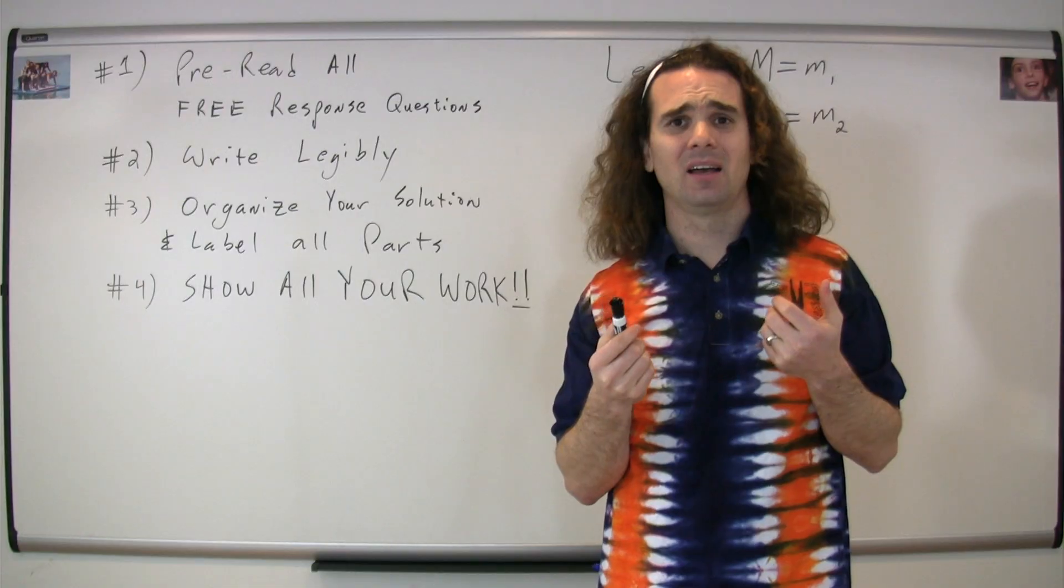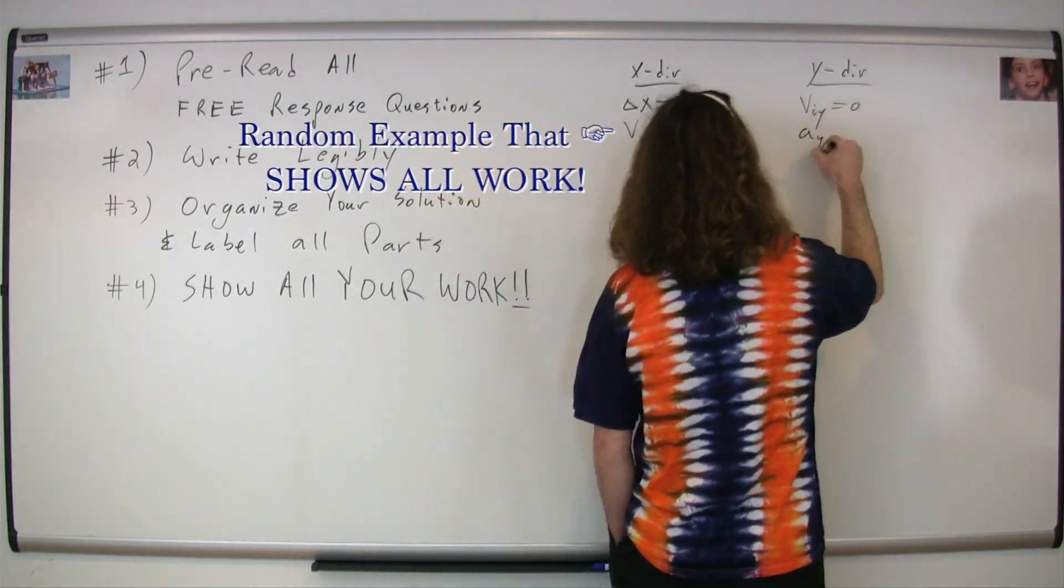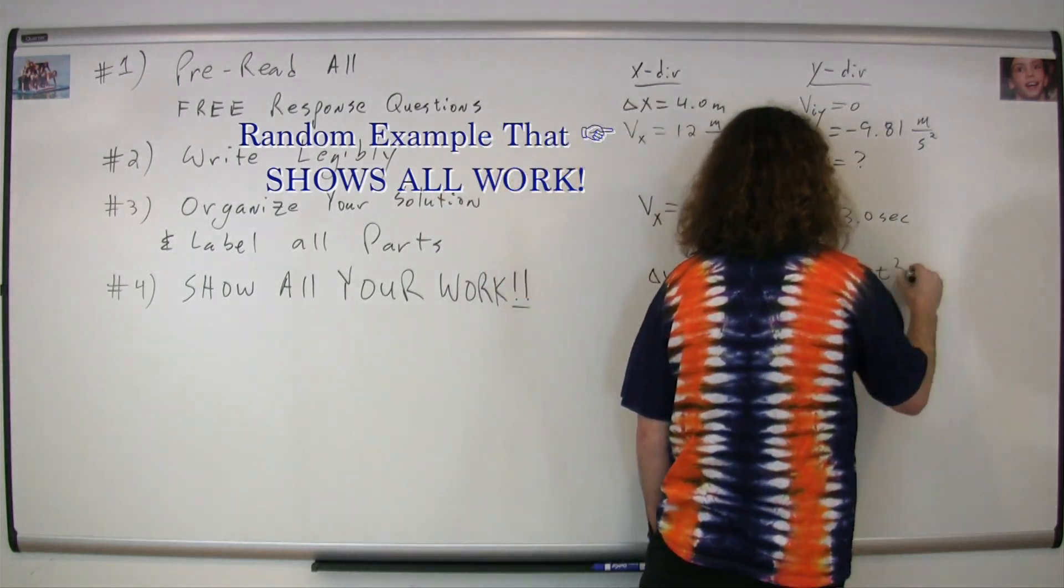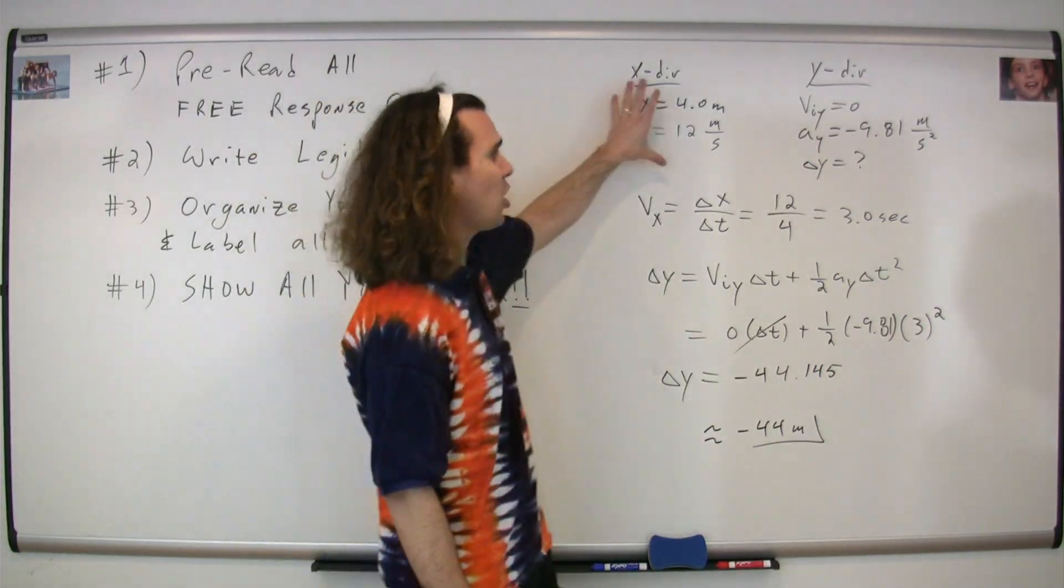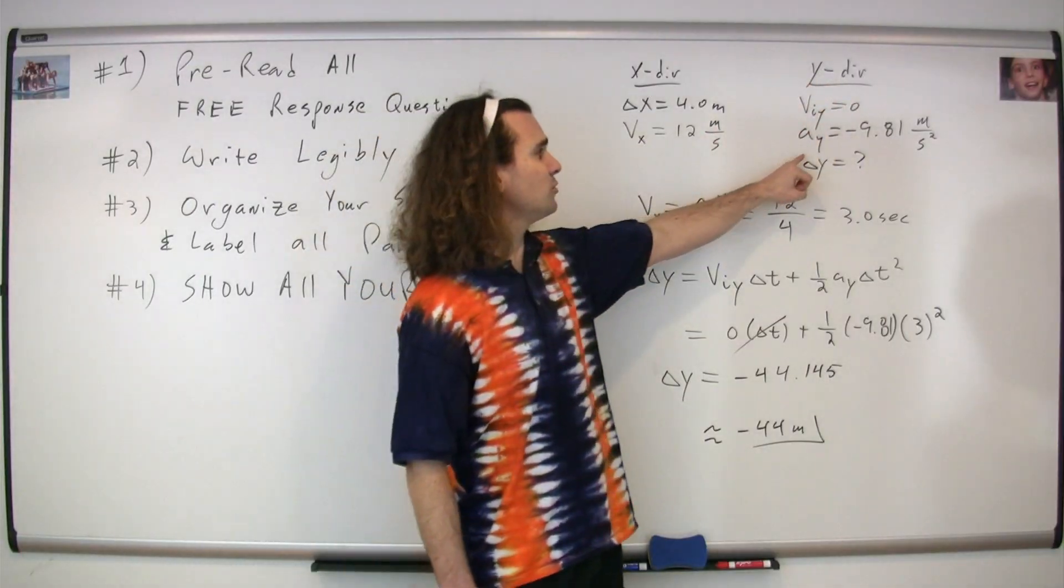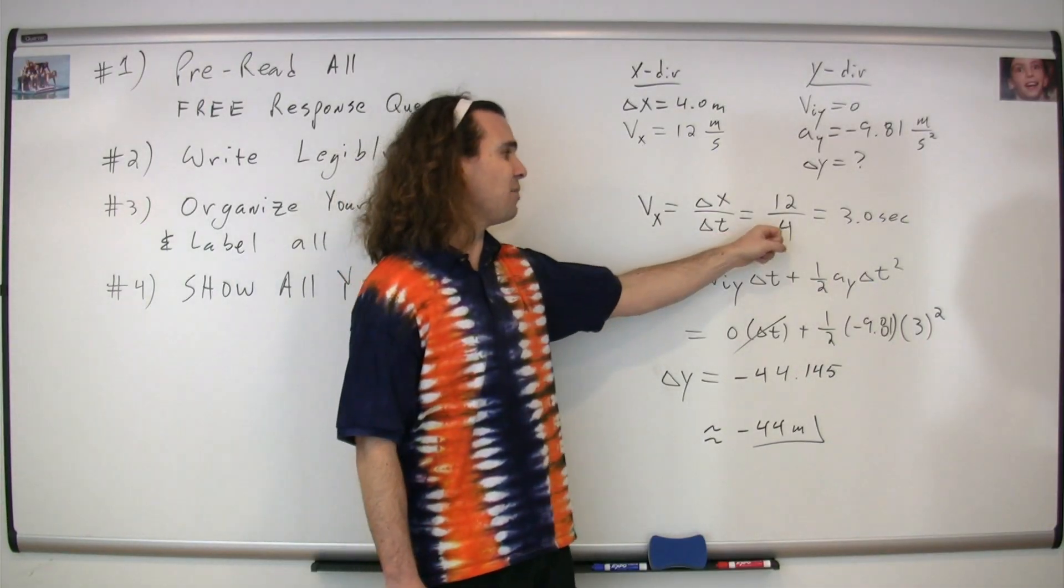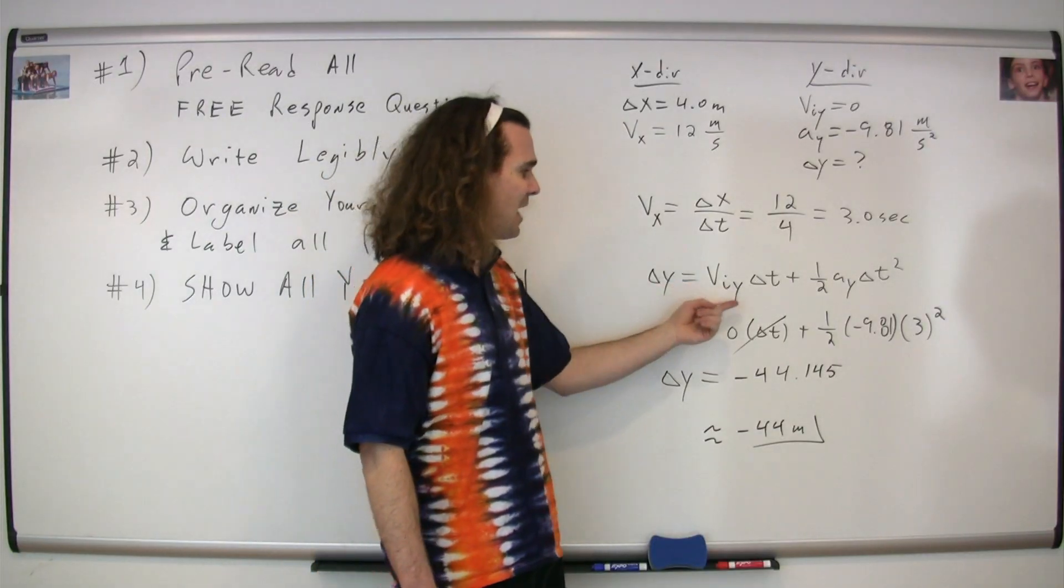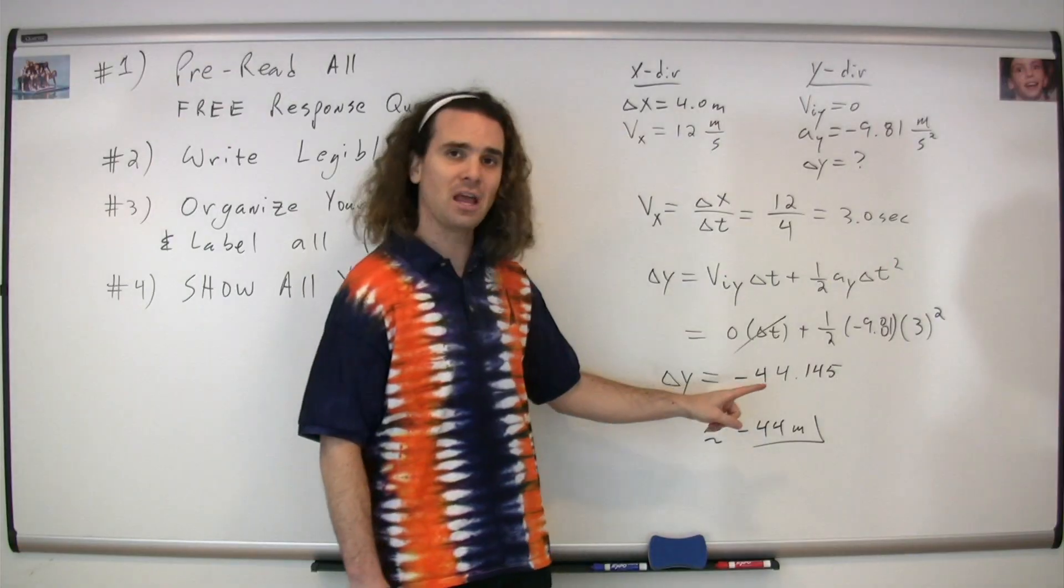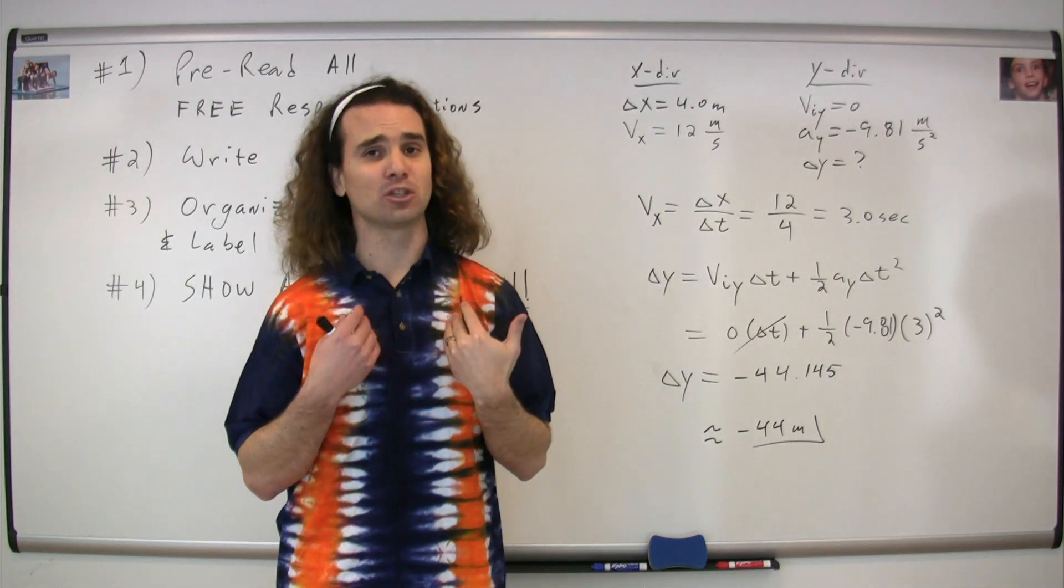What does that really mean, show all your work? Showing your work means that you start by listing all of the known variables. You use subscripts when necessary. If you're going to use an equation, you start by writing down that equation and then you use the equation. If you're going to use a second equation, you write down that second equation and then you clearly solve that equation and come to an answer which you clearly identify as the answer. That is what I mean by showing your work.